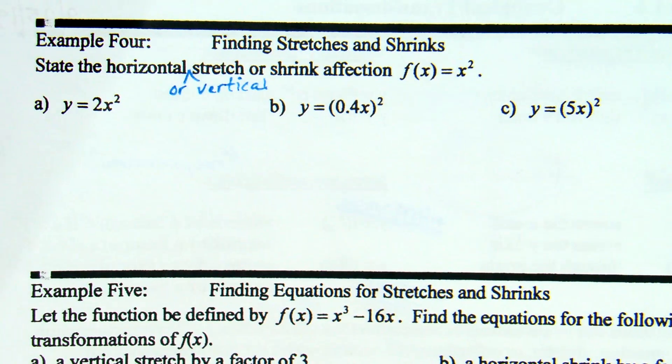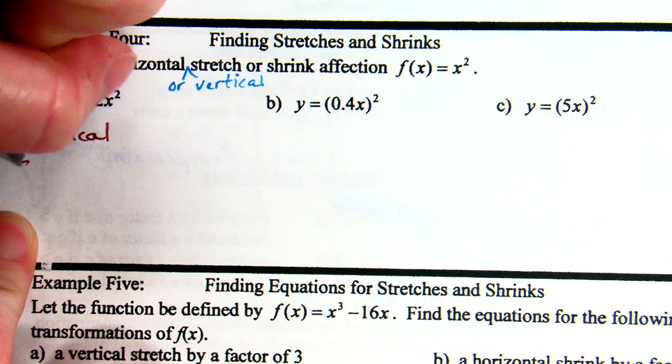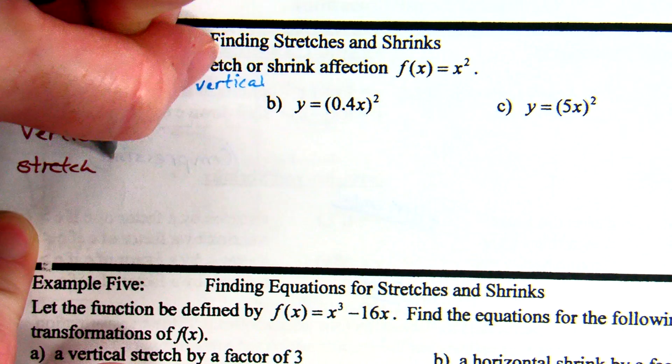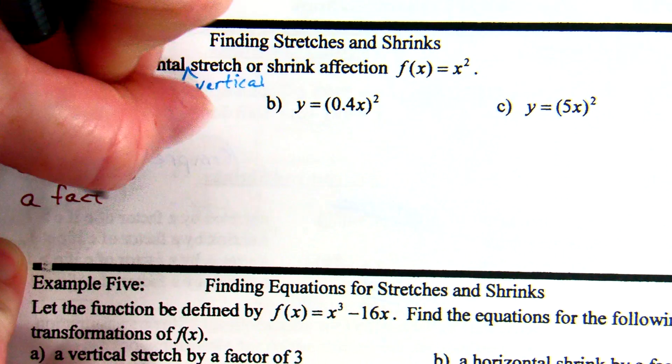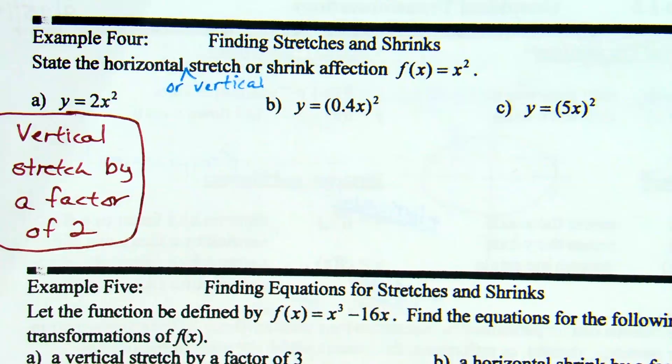I heard both here. I heard vertical, I heard horizontal. Remember the notes say if it's a number multiplying out front, so this is 2 times that function x squared, so that is going to be a vertical stretch by a factor of 2. And that's all I'm going to talk about on this one. When the number is just multiplied out front, vertical stretch all the way through, we're not going to do anything fancy with it. And it's multiplied by the whole function.